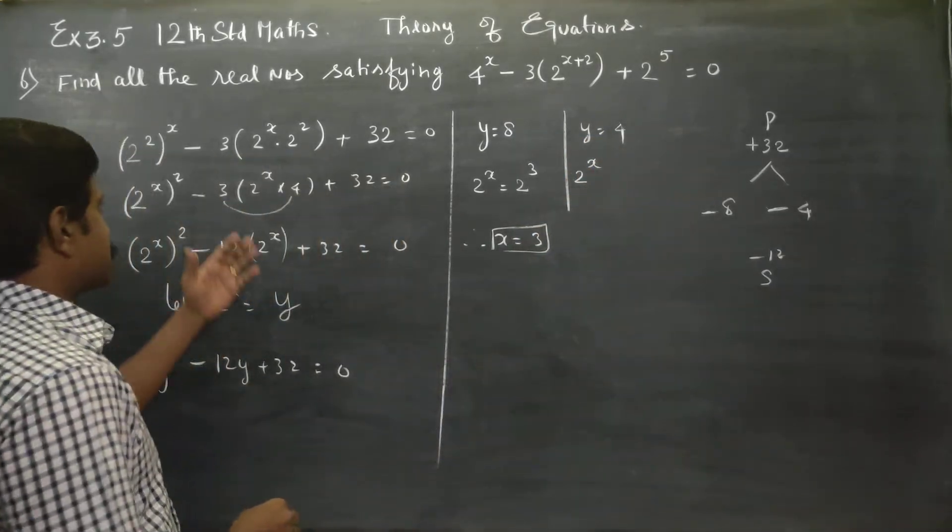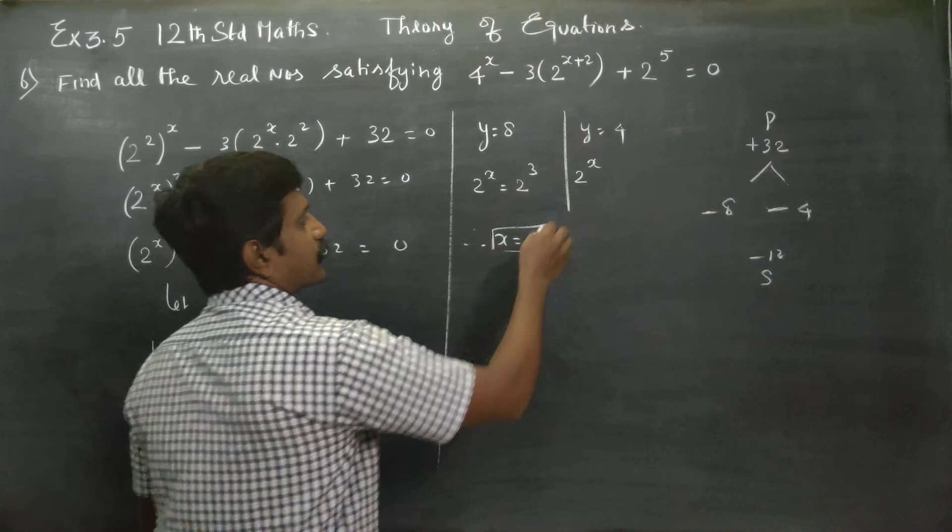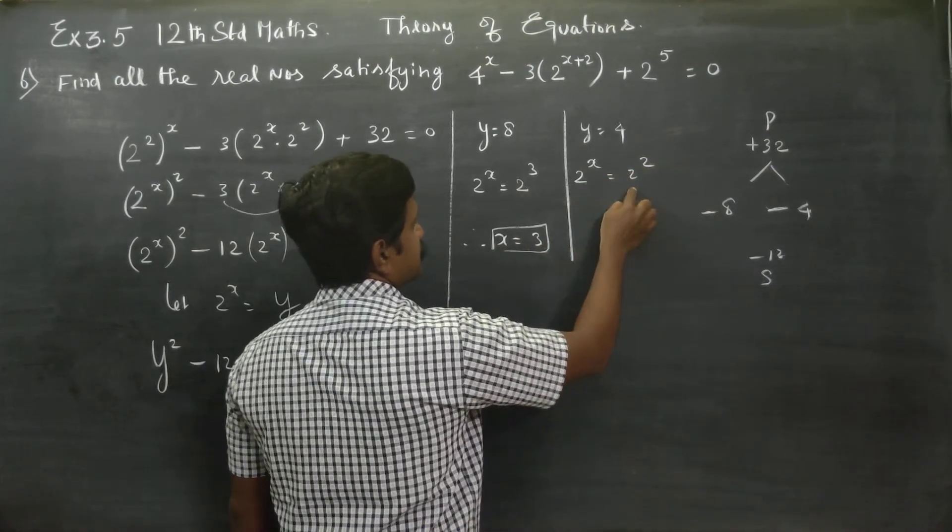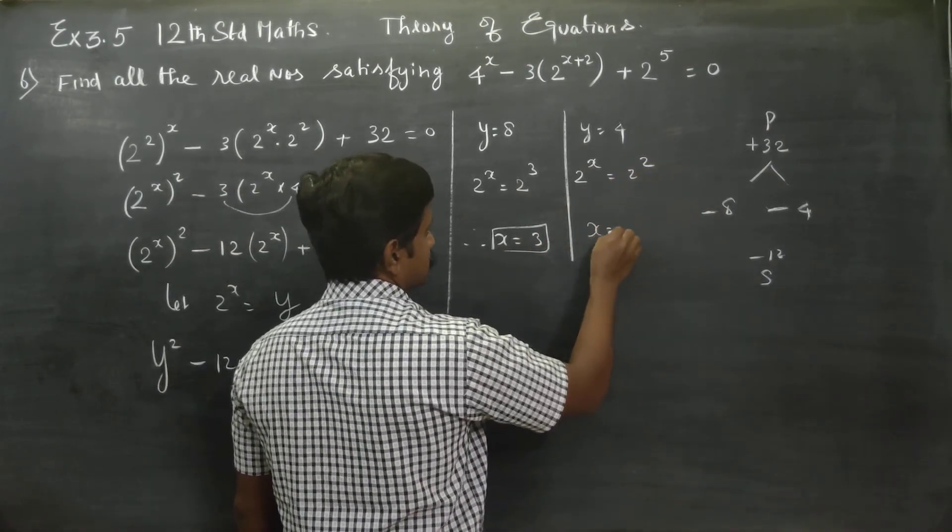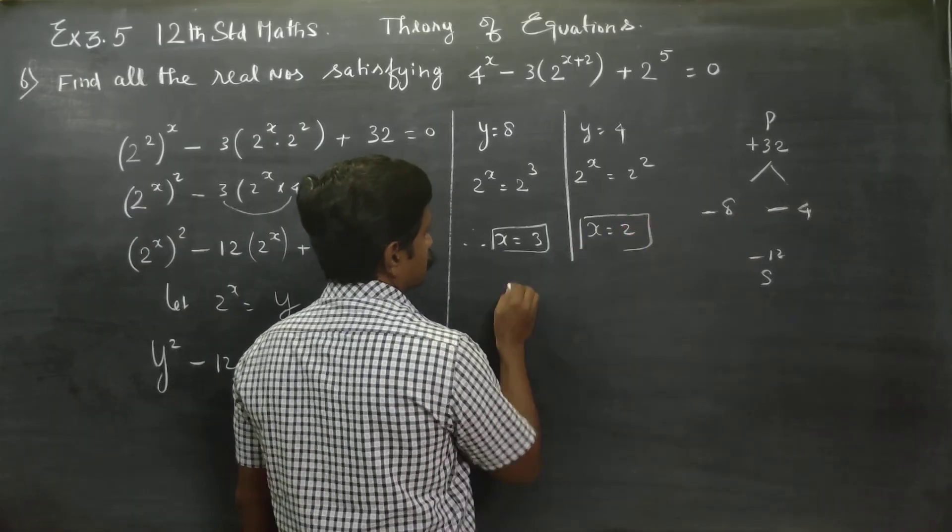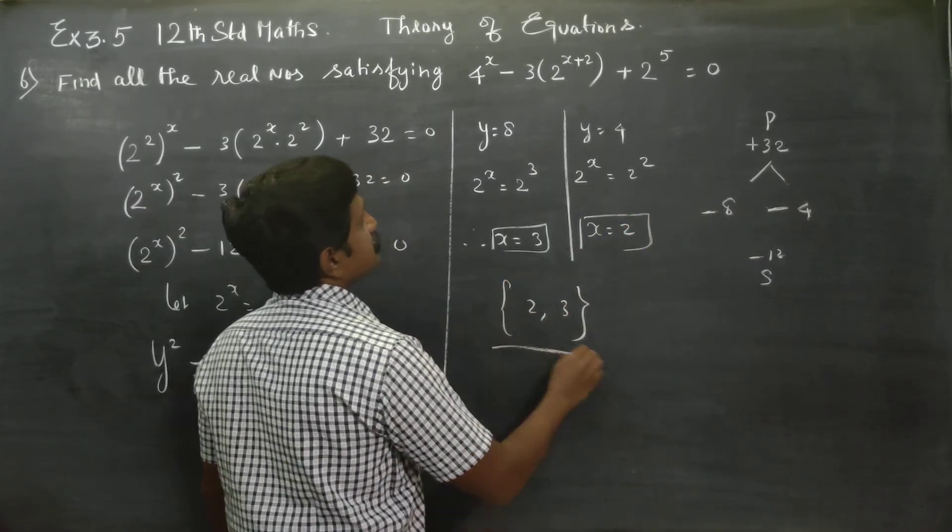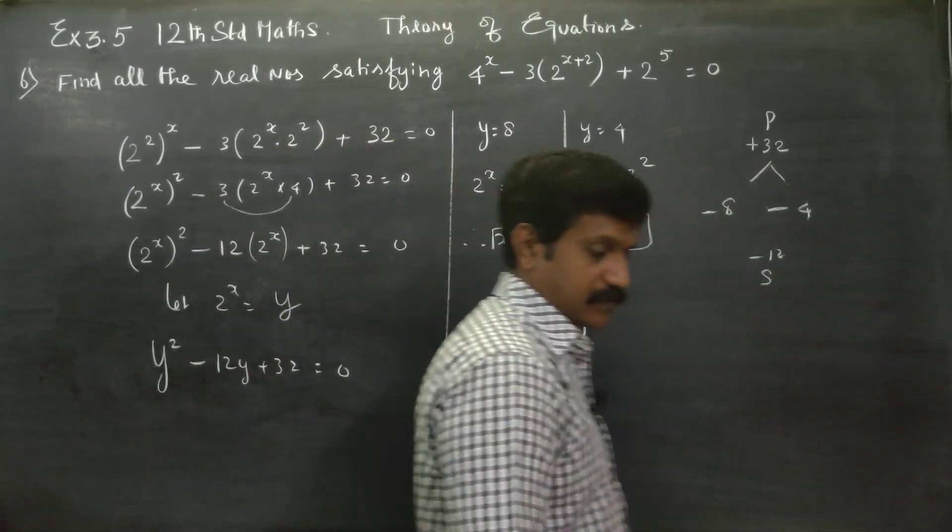Y is 2^x equals 4 can be written as 2^2. When bases are same, powers are same. Therefore x equals 2. Your solution is {2, 3}.